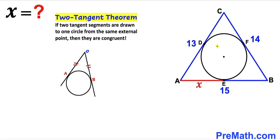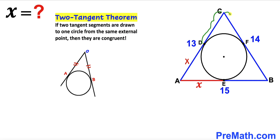Now applying this to our problem: tangent AE equals tangent AD, so both are X. Likewise, tangent CD equals tangent CF, so CD is congruent to CF. And tangent BF is congruent to tangent EB.